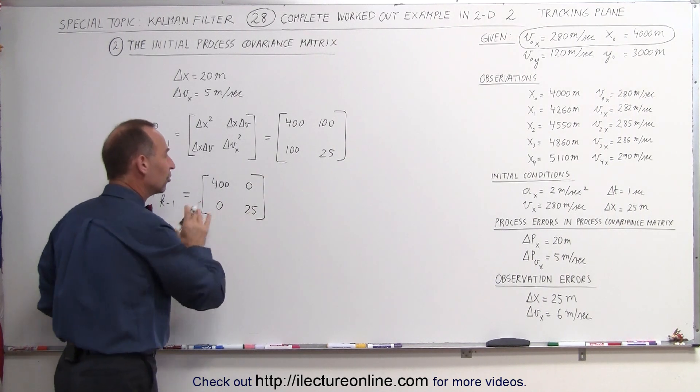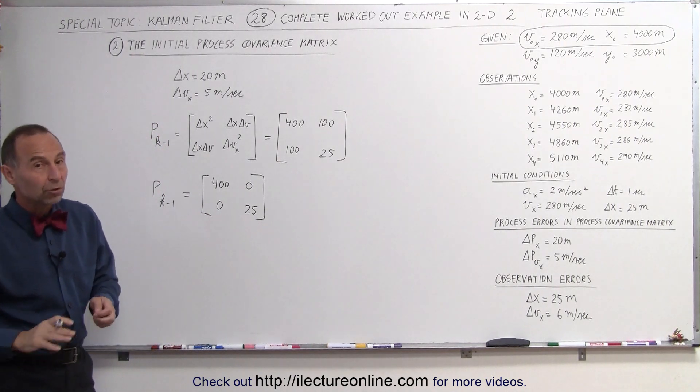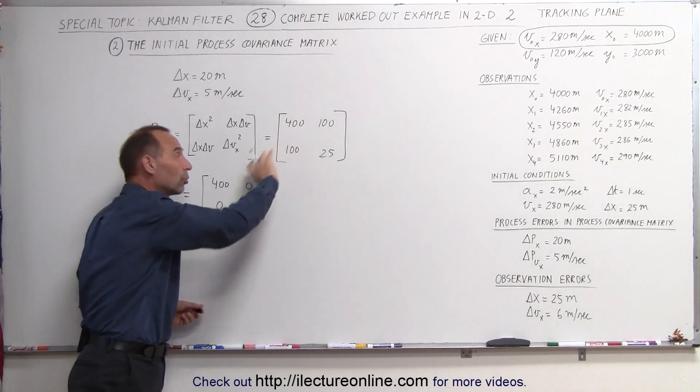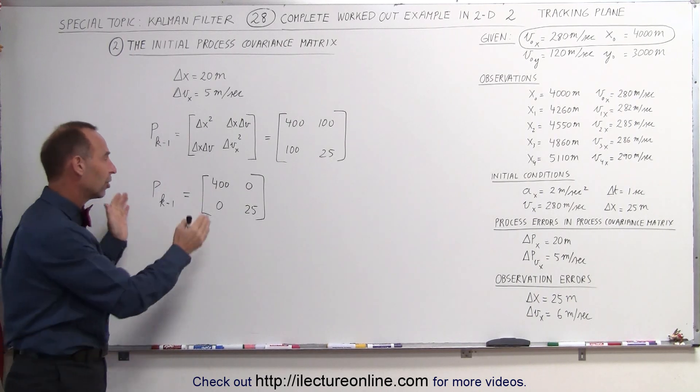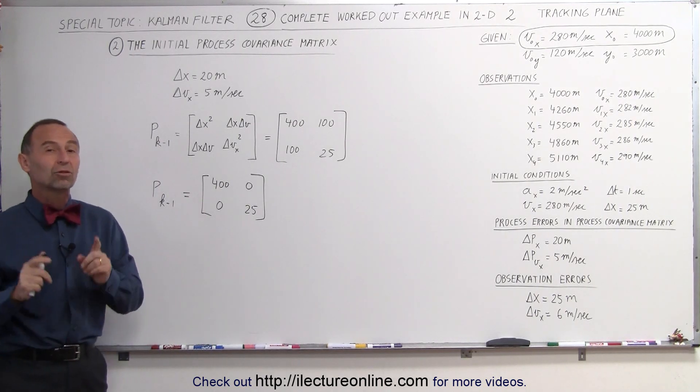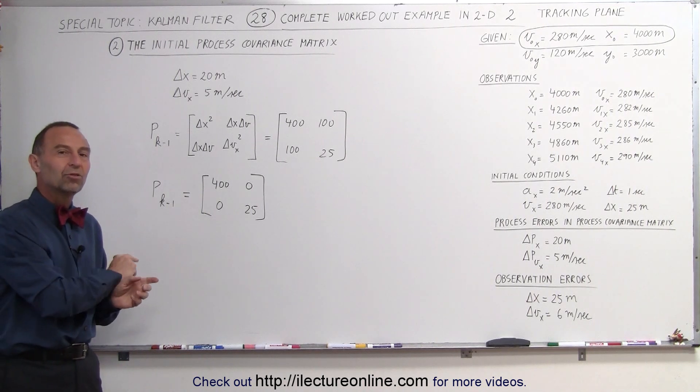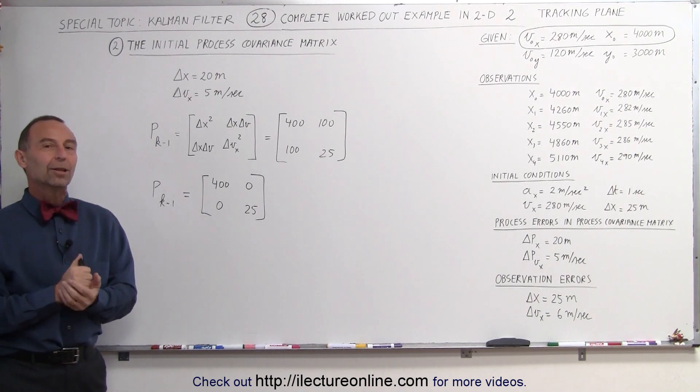That would be sufficient for us to do our first example. There are cases where you may want to use the cross terms, and we'll do some examples in the future. But for now, let's make it simple. Let's call this our process covariance matrix using the initial position and velocity errors in the process.